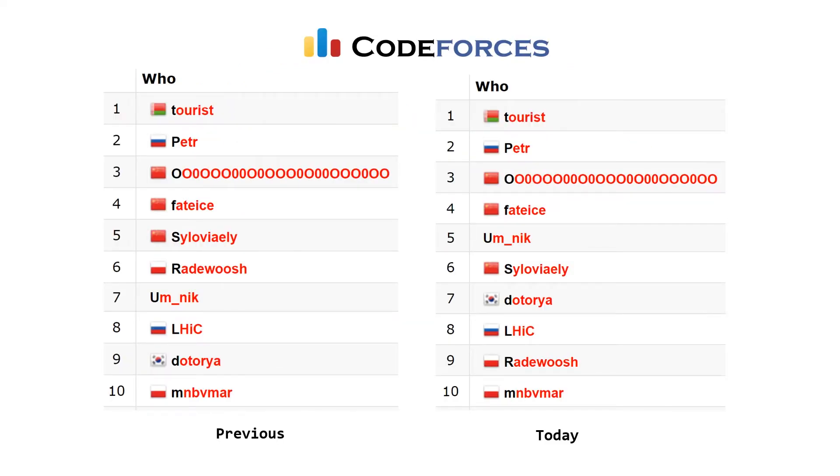Taking a look at the overall top 10 leaderboard, there were some changes due to round 488. The top four places didn't change. We still have in first Tourist, second Petra, third 00, and fourth Fate Ice. But UMNIC jumped two spots from 7th to 5th. Cy Loviale dropped one. Dodoria jumped from 9th to 7th. LHIC, there was no movement, and Raid Woosh dropped a couple spots from 6th to 9th.